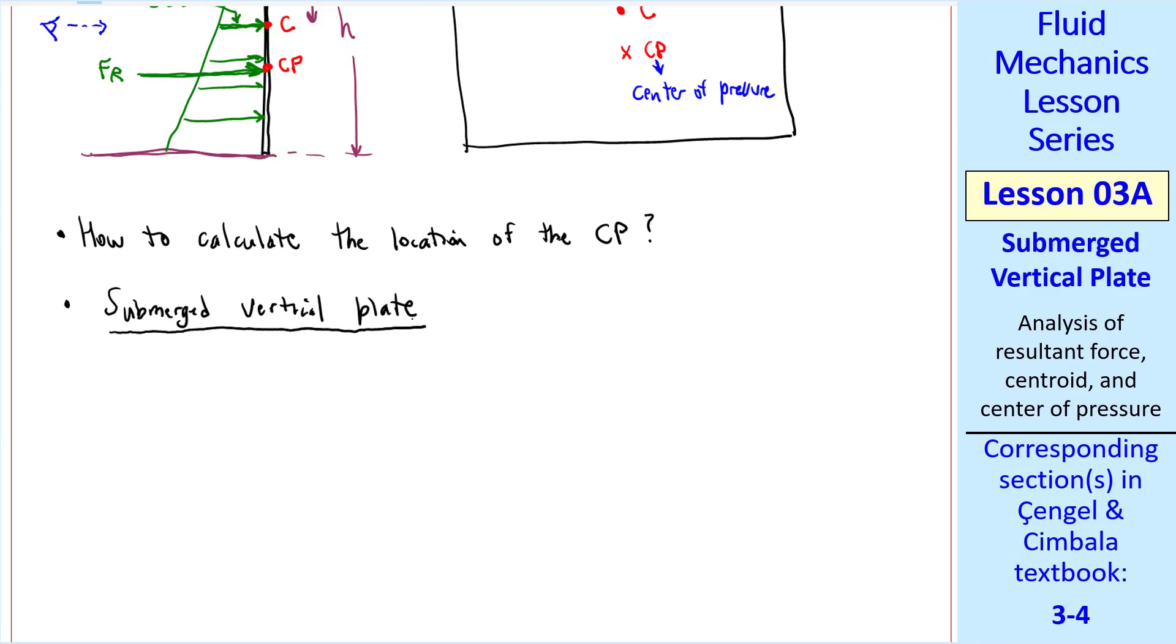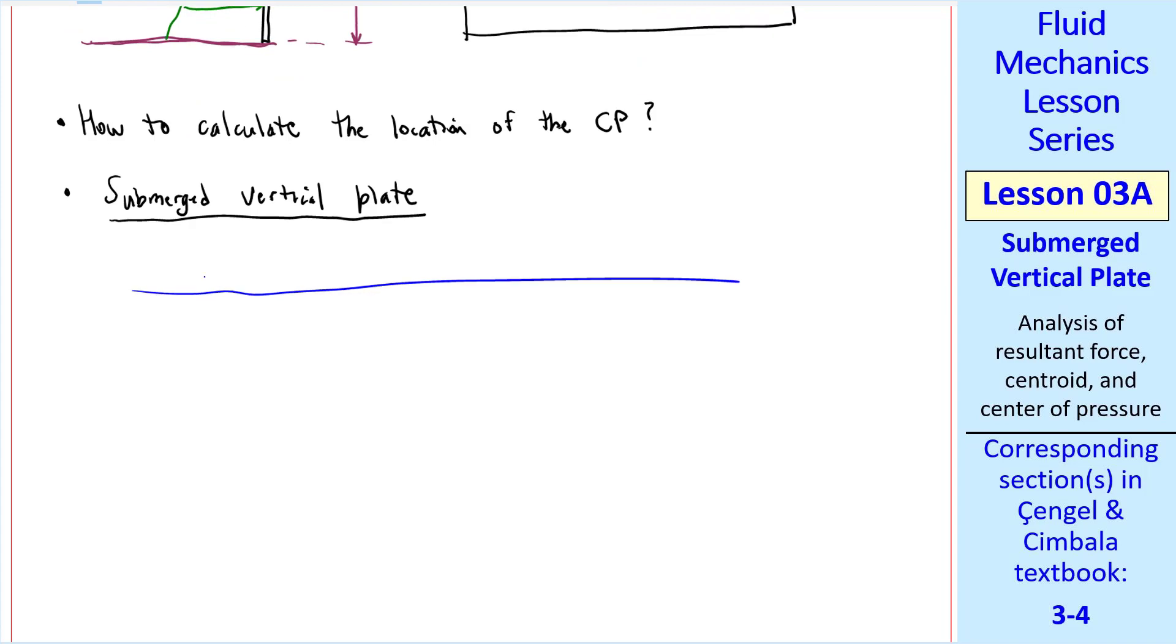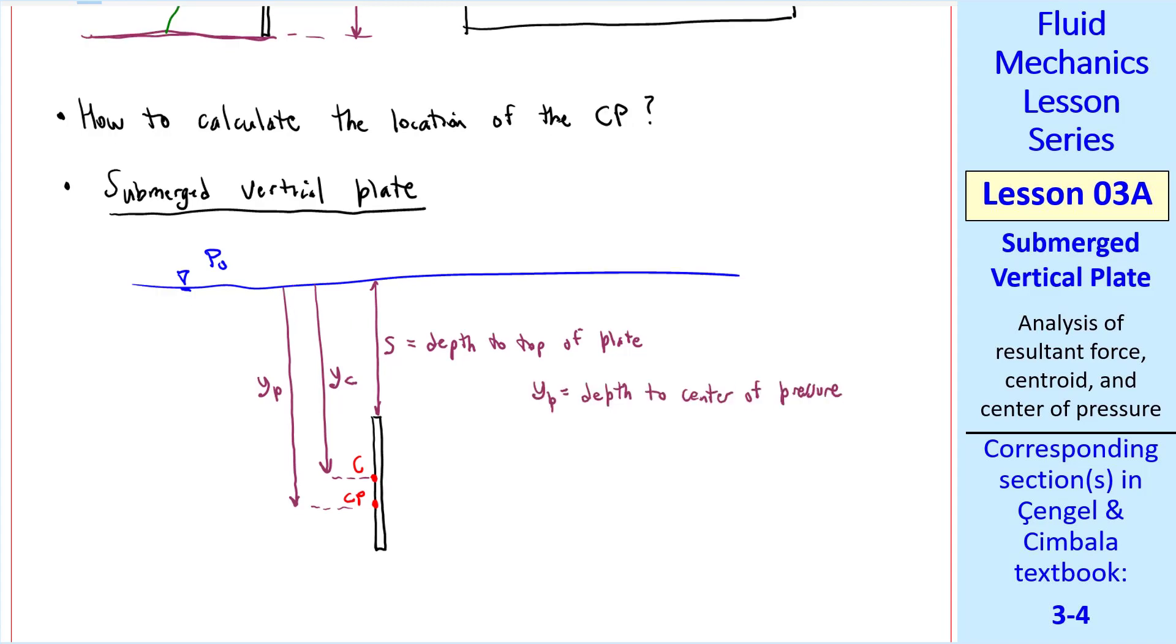Let's do the general analysis of a submerged vertical plate. Here's the surface of the water, or any other liquid. Let P0 be the pressure at the surface. As I mentioned before, this is atmospheric pressure if we work with absolute pressures. But P0 is zero for gauge pressures. Let's let our vertical plate be some distance S from the surface to the top of the plate. If this is a rectangular plate, the centroid will be right at the center. But our analysis here will actually work for a plate of any shape, where the centroid may or may not be in the center of the plate. Using our notation that Y is the distance from the surface, we'll let YC be the distance to centroid C. The center of pressure is somewhat lower than that. We'll call that YP. YP is the depth to the center of pressure, and YC is the depth to the centroid of the plate.